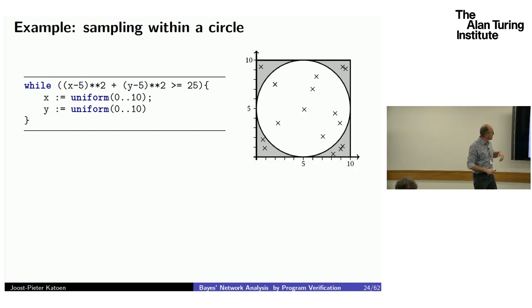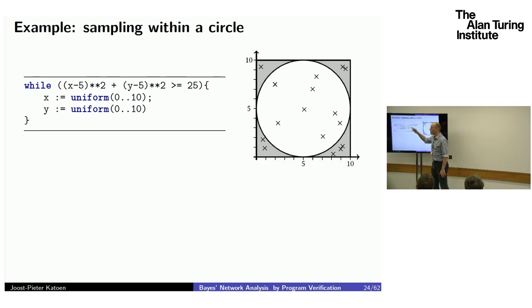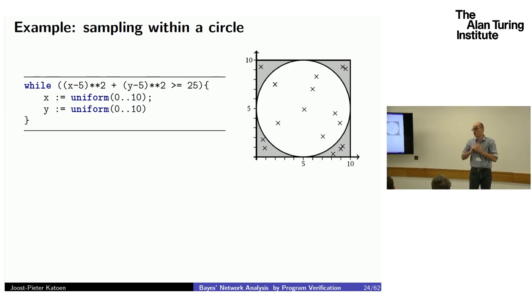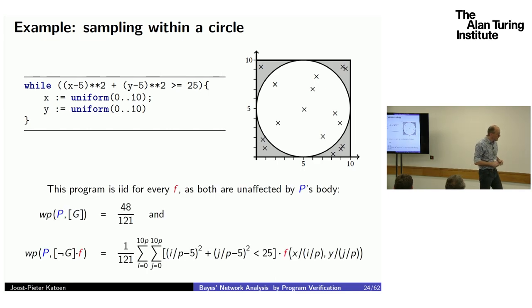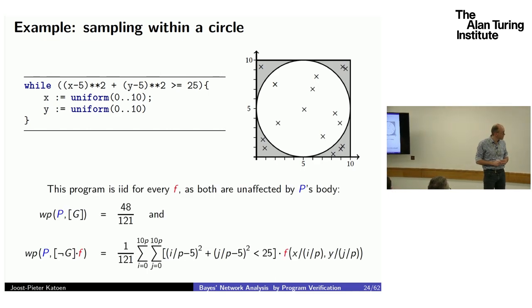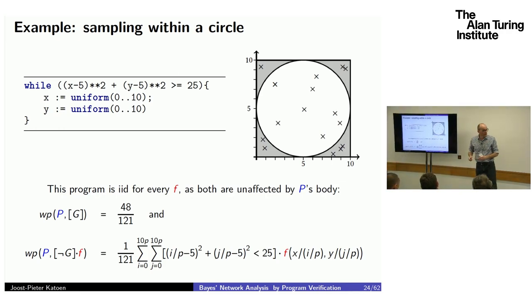Here is an example: playing darts, trying to get a point inside a circle using rejection sampling. As long as the point is in the rectangle, you sample X and Y uniformly and repeat until the point is inside the circle. This loop is IID because the values of X and Y in the next iteration are independent of previous iterations. In fact, this loop is IID for every expectation F.